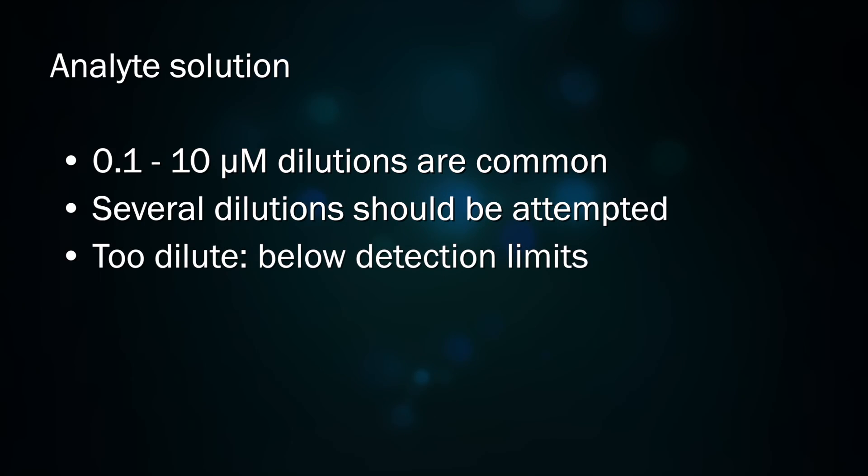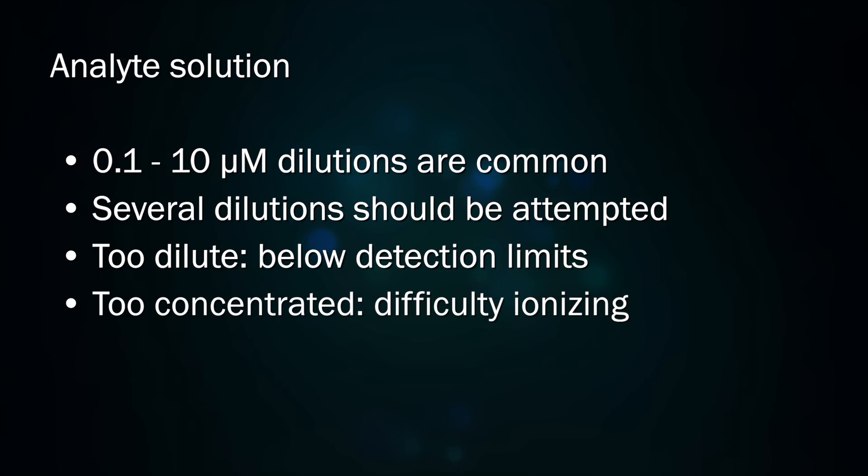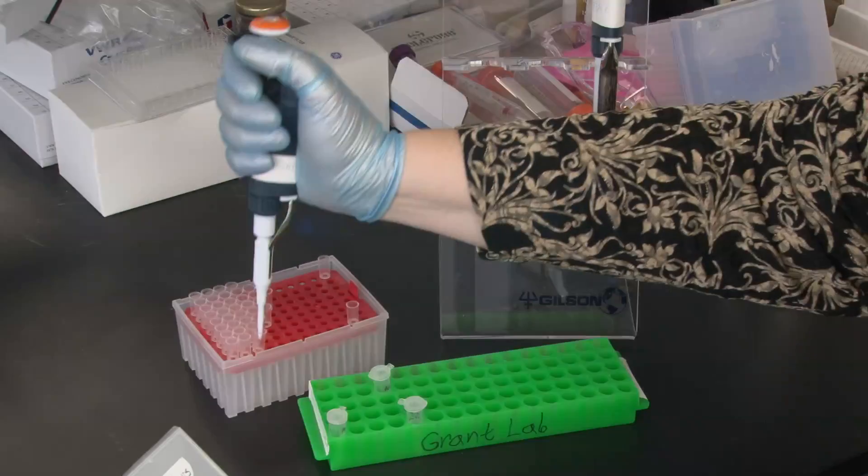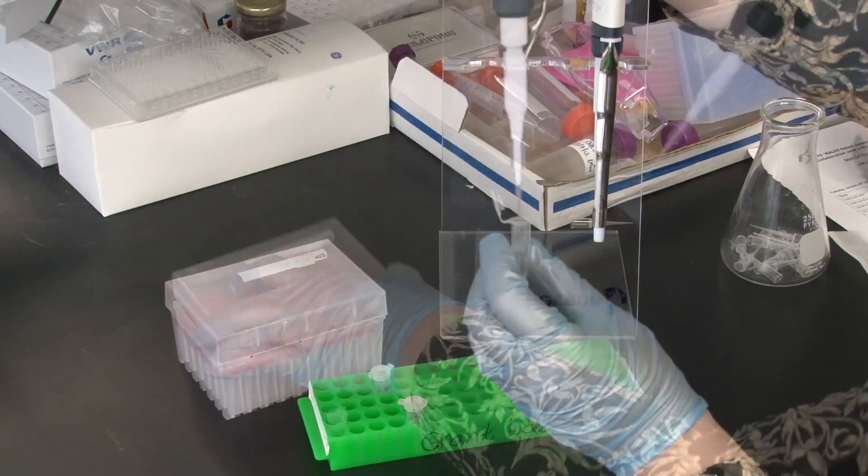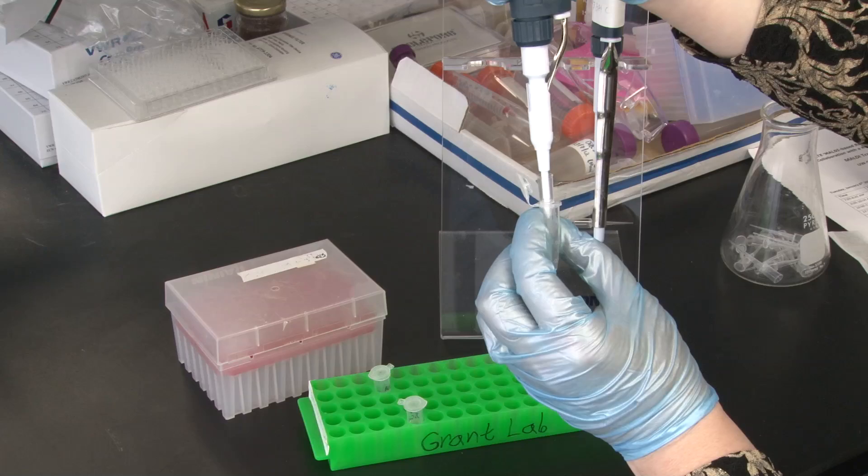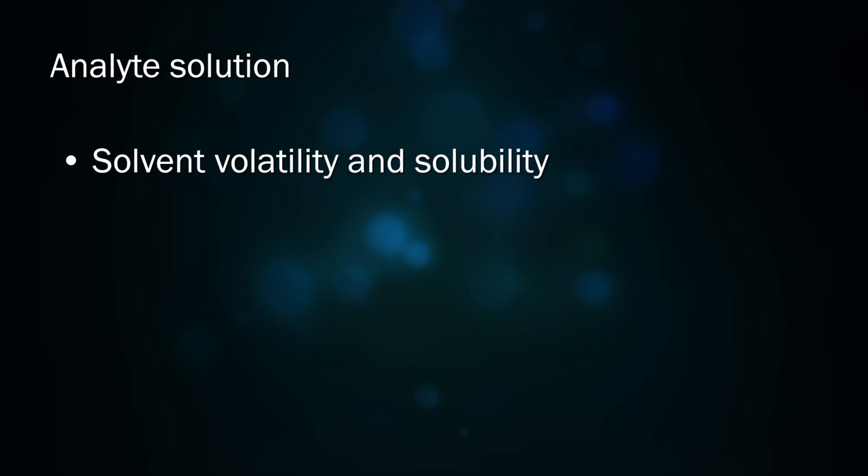If your sample is too dilute, it may be below the detection limits of the instrument. If it's too concentrated, it may have difficulty ionizing. Use Eppendorf micropipettes and tubes that are clearly labeled. Choose a solvent which has an appropriate volatility and in which your analyte is fully soluble.